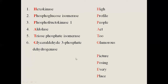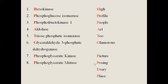In the second part of the mnemonic, 'P' in 'picture' stands for phosphoglycerate kinase, 'P' in 'posing' stands for phosphoglycerate mutase, 'E' in 'every' stands for enolase, and 'P' in 'place' stands for pyruvate kinase.